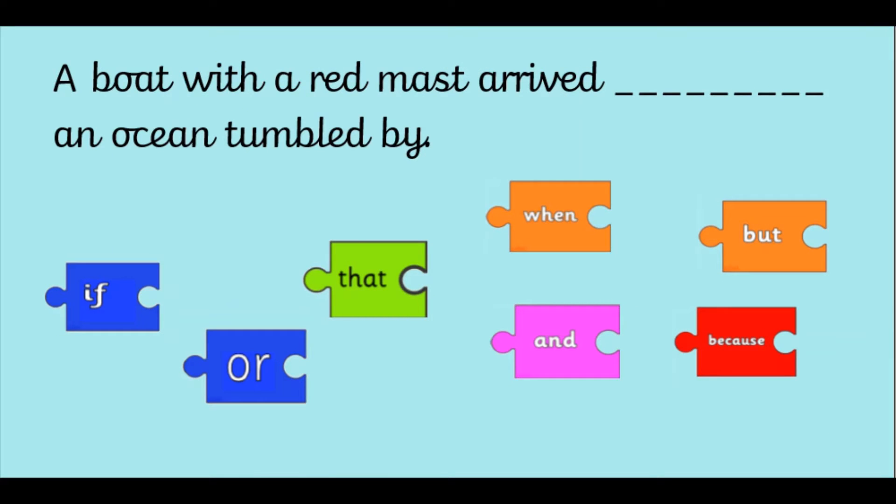Okay, let's have a look at the next one. A boat with a red mast arrived and ocean tumbled by. Pause the video and have a think about which of these conjunctions could go in this gap. Now I think there are actually two that would make sense. They would have slightly different meanings, but I think there are two that could work. So pause the video and see if you can work out what those two are.